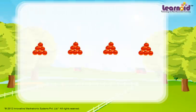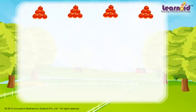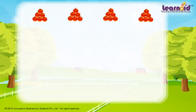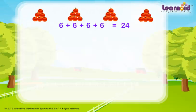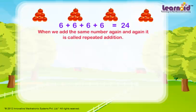If we want to know the total number of apples, then we have to add all the numbers. 6 plus 6 plus 6 plus 6 is equal to 24. When we add the same number again and again, it is called repeated addition.